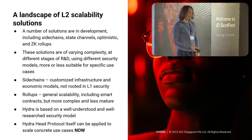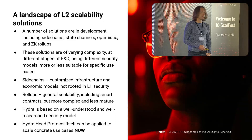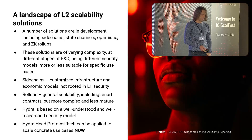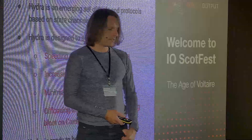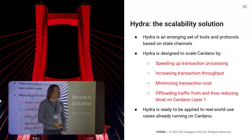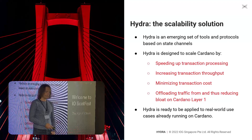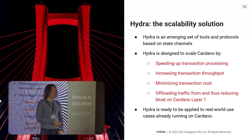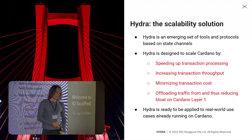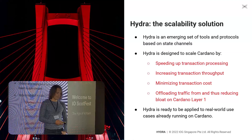Hydra, in particular, is simple to use. Its security model is well understood, and most importantly, we can start applying it to concrete use cases and applications right now. So what is Hydra? It's going to evolve into a family of scalability protocols for Cardano — a scalability framework of sorts. It will help us scale Cardano by speeding up transaction processing, thereby increasing transaction throughput of the system. It will also minimize transaction cost and help us offload traffic from layer one for applications that really need it.